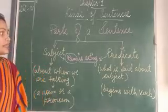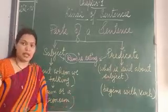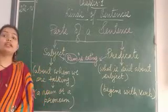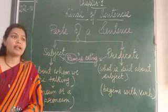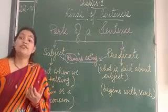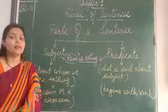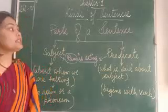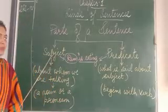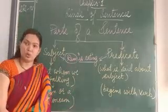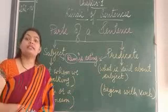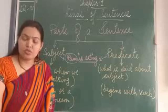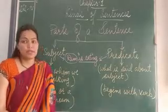Now in some sentences, the predicate is there but the subject is hidden — or you can say there is no subject. For example, when we are giving a command, because a command or a request is an imperative type of sentence and it starts with a verb. An imperative sentence does not have the subject present. For example, when I say 'Give me a book' — here 'give me a book' is the predicate and there is no subject. Same way, when I say 'Switch on the light,' again there is no subject, only the predicate is there. Thank you.